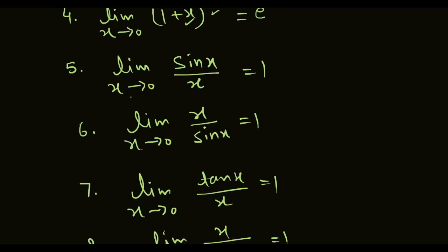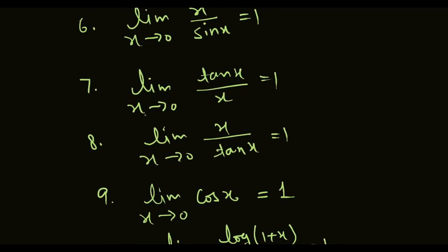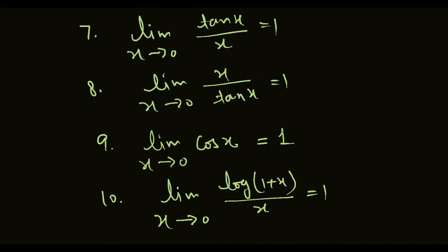Limit x approaches to 0: sin x upon x and x upon sin x, both equal 1. Limit x approaches to 0: tan x upon x and x upon tan x, both equal 1. Ninth formula: limit x approaches to 0, cos x — cos 0 equal to 1. Tenth: limit x approaches to 0, log(1 plus x) upon x, equal to 1.